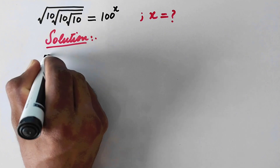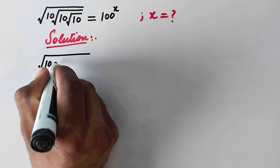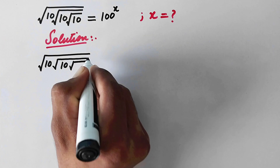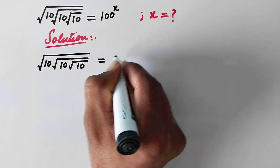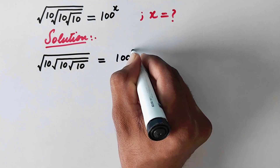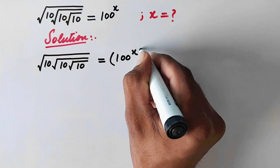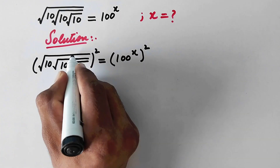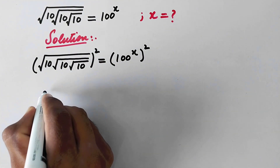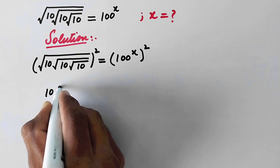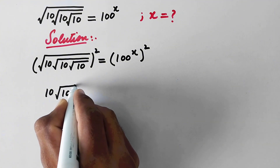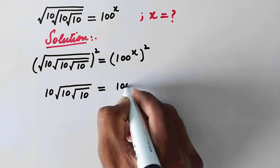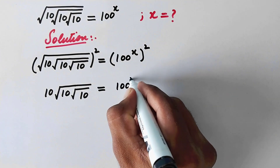Here we will write: square root 10 times square root 10 times square root 10 is equal to 100 raised to power x. So here we will take square on both sides. This square root will be cancelled by this square, and what is left is 10 times square root 10 times square root 10, equal to 100 raised to power 2x.